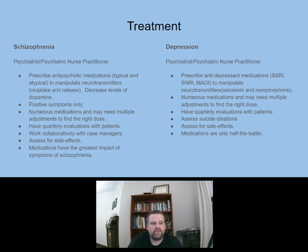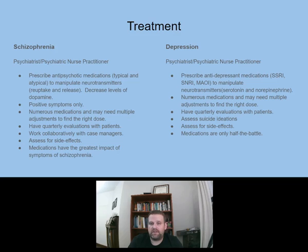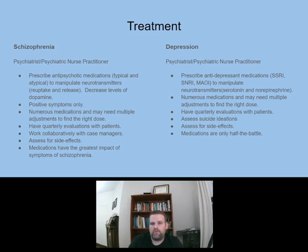The treatment for schizophrenia from a psychiatrist focuses on the positive symptoms — hallucinations and delusions — and cognitive symptoms. There are numerous medications and may need multiple adjustments to find the right dose. They have quarterly evaluations with patients, work collaboratively with case managers, assess for side effects of medications, and medications have the greatest impact on symptoms of schizophrenia. If you have schizophrenia, medications are going to be the best form of treatment.